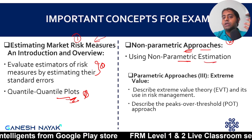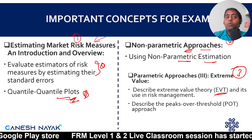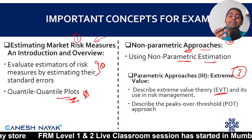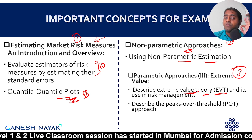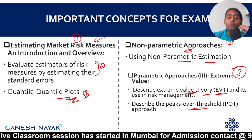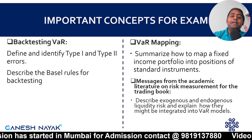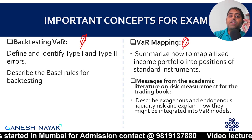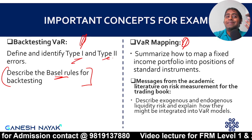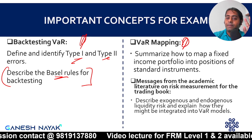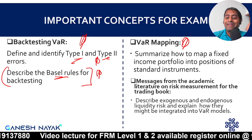For the parametric chapter, Extreme Value Theory (EVT) takes you inside the tail — beyond what was covered in Level 1 — and allows assessment of that tail, which is an important concept that can be tested in theory. The peaks-over-threshold approach is mostly theoretical but at least one concept from this chapter is expected to be tested. Backtesting VAR and VAR mapping are both very important chapters. For backtesting, the connection to the Basel rule is key, as is understanding how Type I and Type II errors impact you during backtesting.